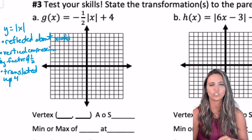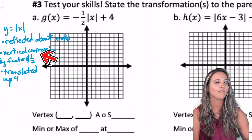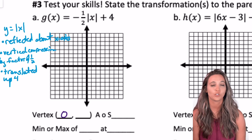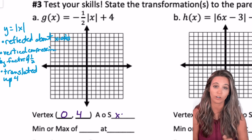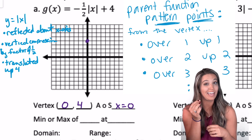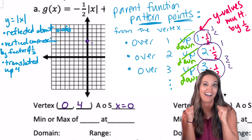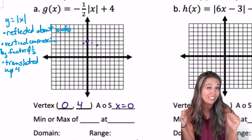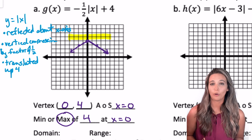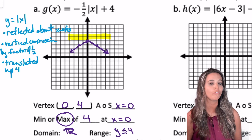It's time to test our skills. For the first one, identify transformations: a negative sign outside is a reflection over the x-axis. One-half factor outside is a vertical compression by one-half. Plus four means translated up four. Vertex is at zero, four. Axis of symmetry is x equals zero. From the vertex, pattern points go over one, down one-half (reflection and compression applied). This graph has a ceiling — maximum value of four at x equals zero. Domain is all real numbers; range is y less than or equal to four.